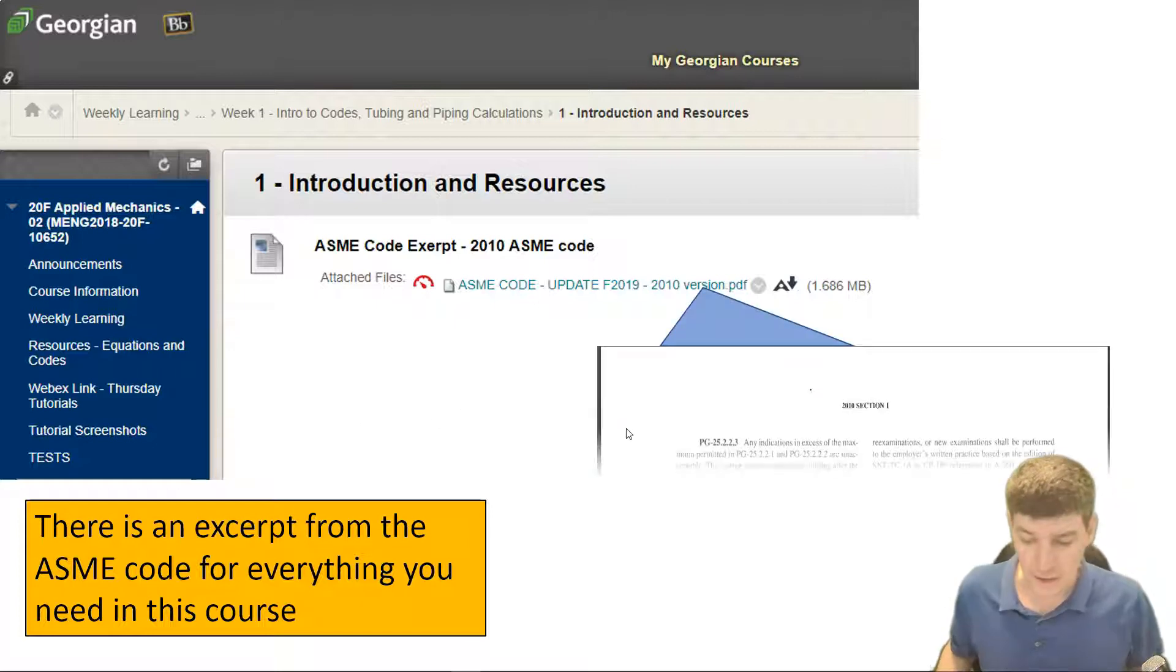In that first section, what I outlined to you is that there's an ASME code document that you're going to need, and this is what we're going to use over the next little bit. So make sure you have a copy of it. I suggest if you can, print one out and you have a paper copy in front of you, but as a minimum, have the PDF available.